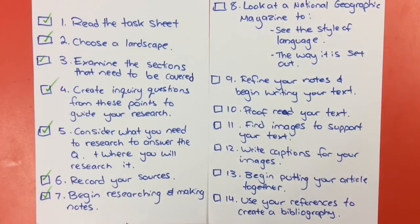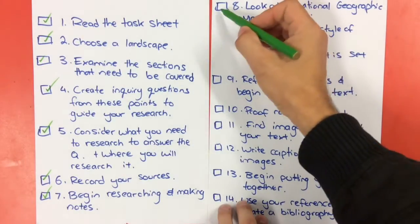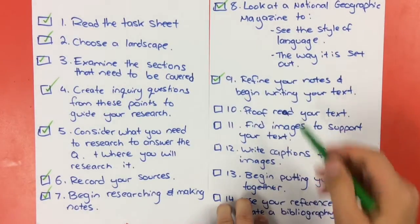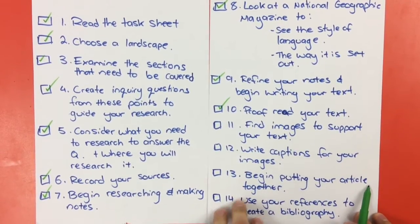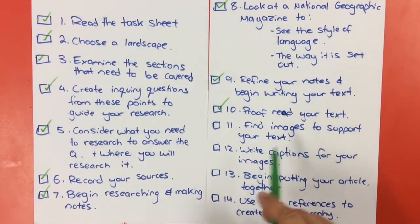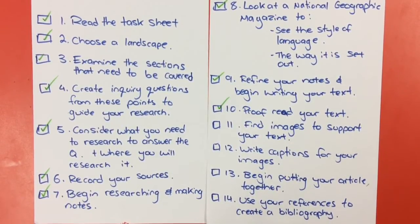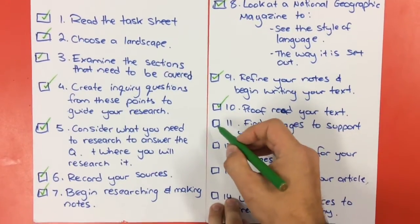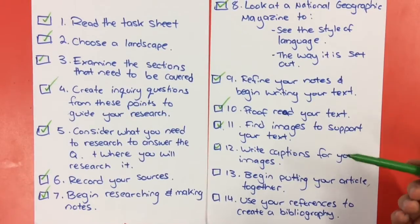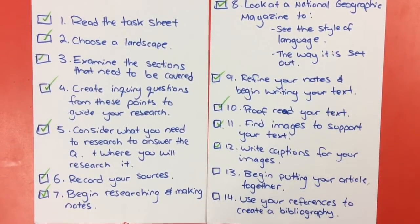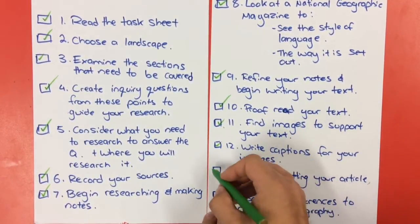You need to summarize those points in a way that does justice to what you are talking about but doesn't waffle on too much. Make sure you are proofreading your text after you've written it because I don't want to see spelling or grammar mistakes - get someone else to do that as well, it's a great way of doing it. Find images that support your text like I showed you in the National Geographic magazine. Make sure you write captions for them, and also record the URL of that image or where you got it from so you can reference it in your bibliography. Then begin putting your article together.